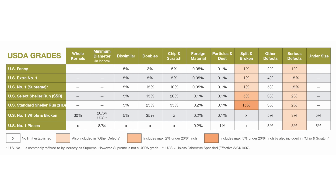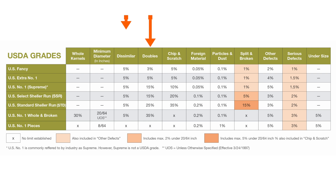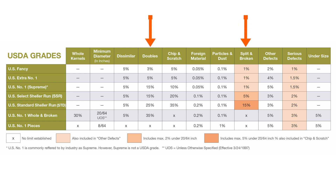For example, a broken kernel that is also chipped and scratched is scored as split and broken. A double that appears to be dissimilar will be scored only as a double. A double that is broken but has insect damage will be scored within the serious defects parameter, which is also counted against other defects for specific grades.